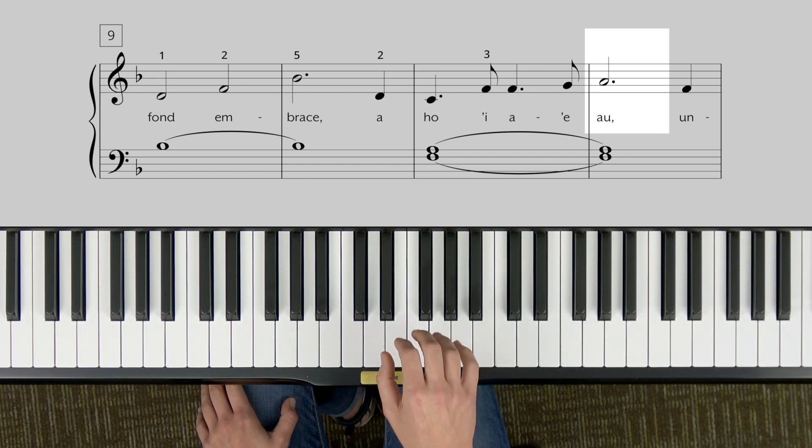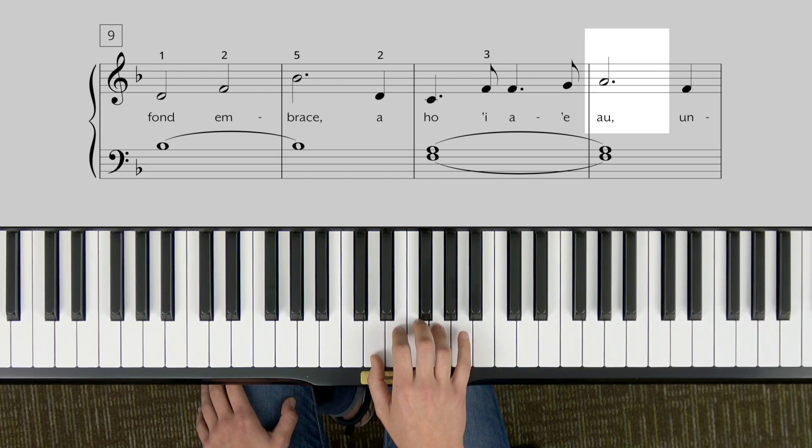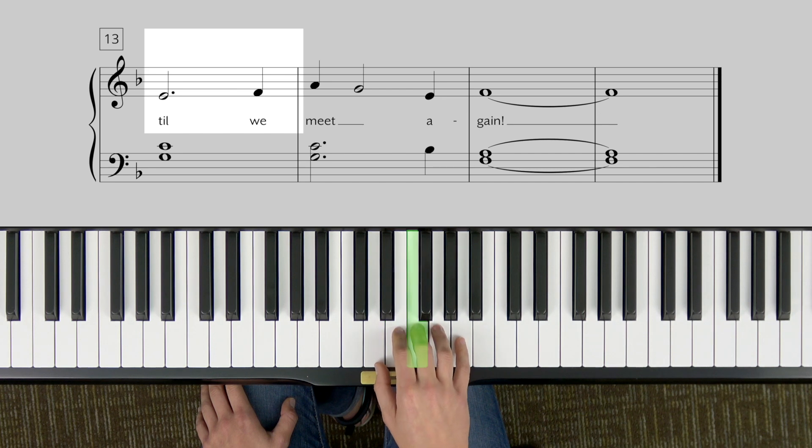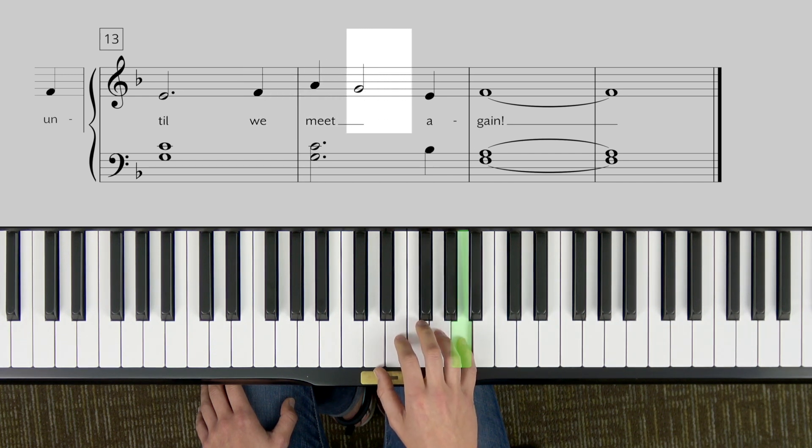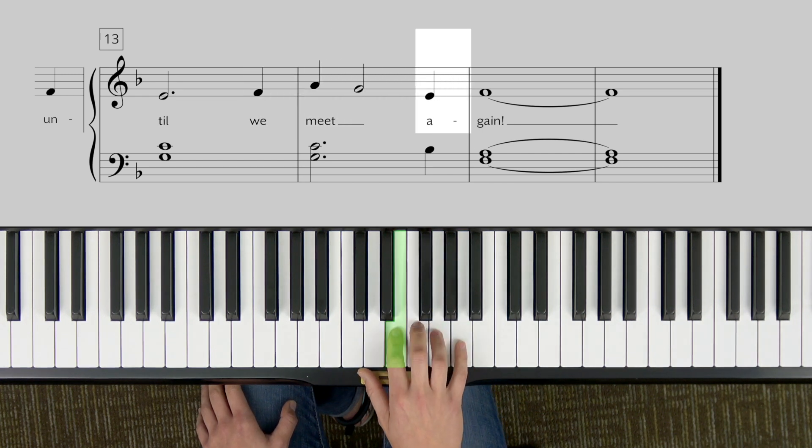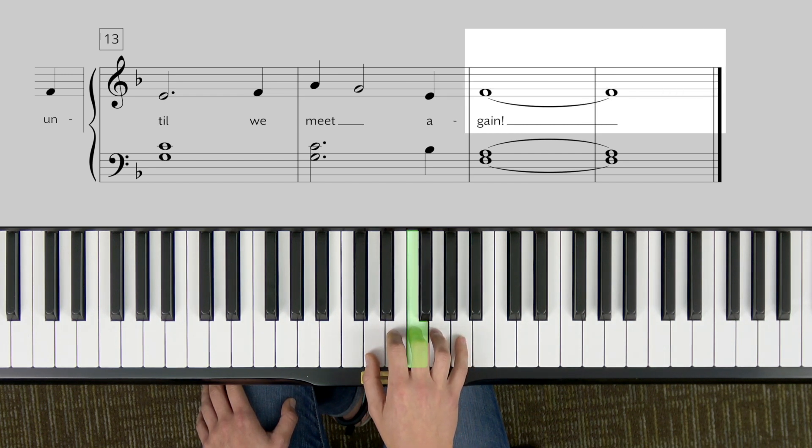I'm going to go on to the next section. We just ended with your five finger on A, so that means your three finger is naturally setting on F again. And the last phrase sounds like this: Until we meet again. So we start three, step down to two, step up, skip up to our five finger, step down, skip down, step up. So some steps, some skips.